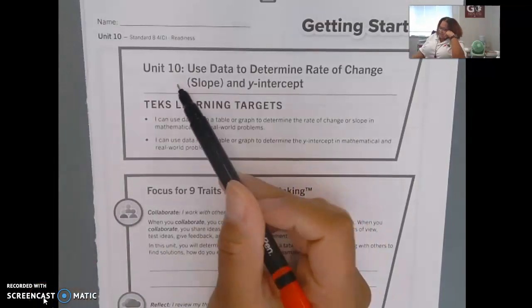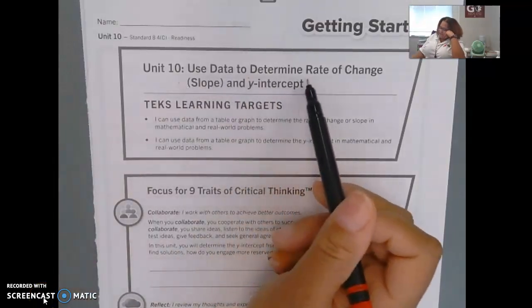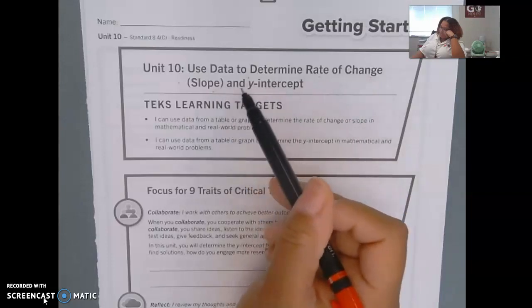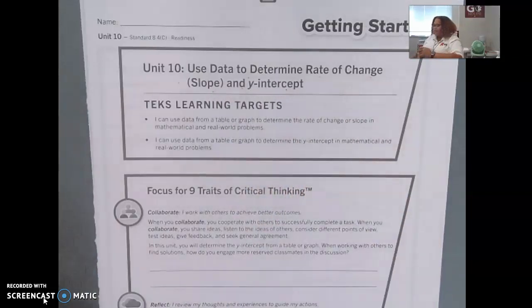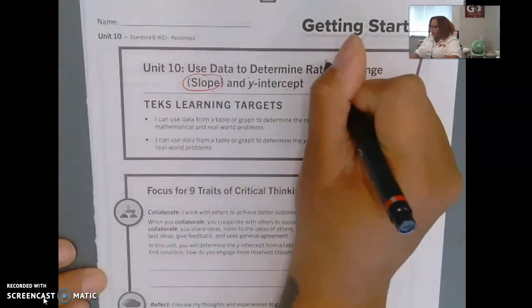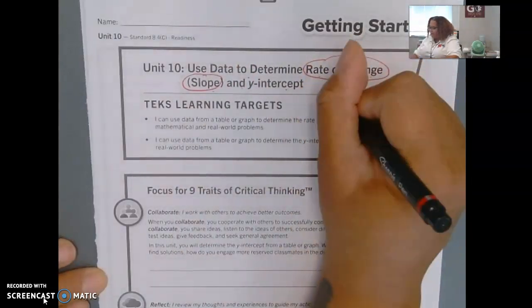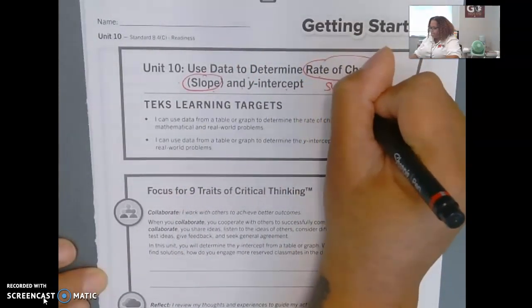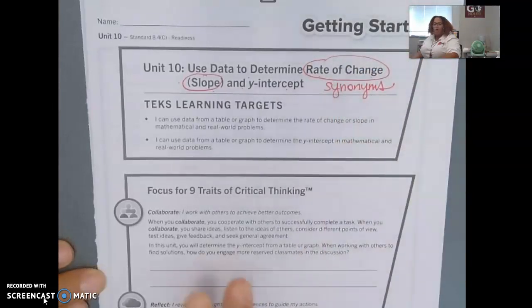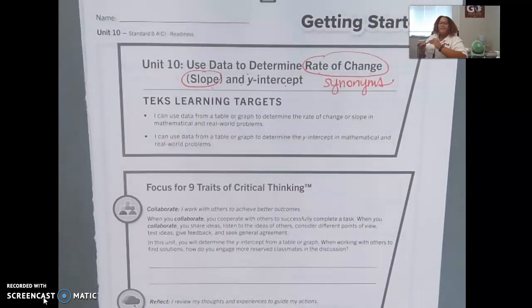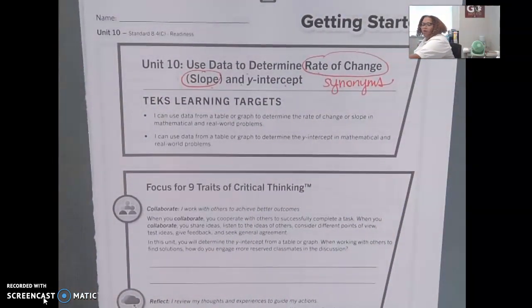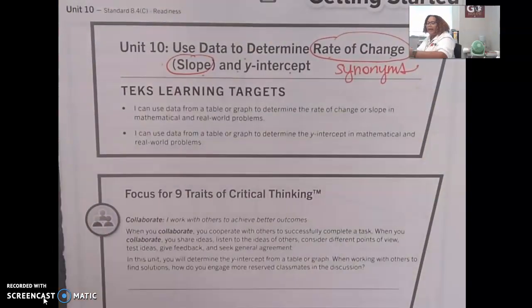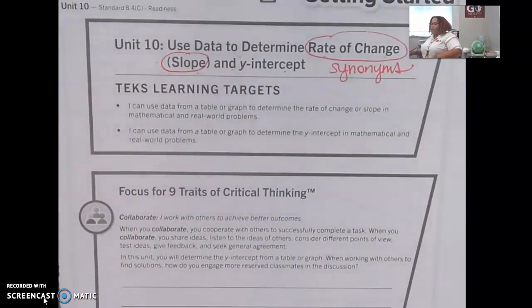Alright, we are looking at Unit 10 and we're using data to determine rate of change or slope and y-intercept. Rate of change and slope are interchangeable words, meaning they are synonyms. Our goals are to use data from a table or graph to determine the rate of change or slope in a mathematical or real-world problem, and use data from a table or graph to find the y-intercept from a mathematical or real-world problem.